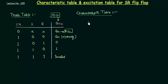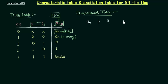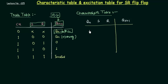First, let me tell you what we have to find out in this characteristic table. We have to find out the value for QN+1, because QN+1 is your next state, and the next state is dependent on your input. The input is S and R, and also the previous state. So it's very clear that the input to this characteristic table is QN, S, R, and the output is QN+1. There are three inputs, therefore eight possible combinations.